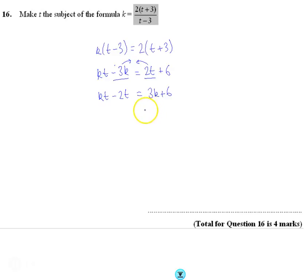Then I'm going to factorize. On the right-hand side, I can factorize to 3(k + 2), and on the left-hand side I want to factorize out t.